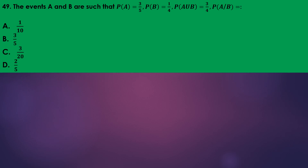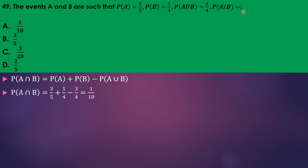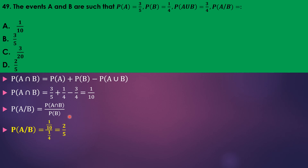Events A and B have P(A) = 3/5, P(B) = 1/4, P(A∪B) = 3/4. Using P(A∩B) = P(A) + P(B) − P(A∪B) = 3/5 + 1/4 − 3/4 = 3/5 − 1/2 = 1/10. Then P(A|B) = P(A∩B)/P(B) = (1/10)/(1/4) = 2/5. Answer is Z.